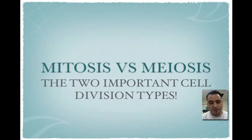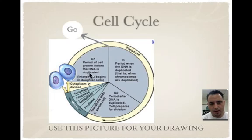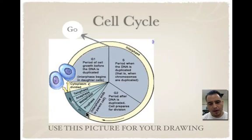Mitosis versus meiosis — the two important cell division types. Let's take a look at the cell cycle. Here we have a drawing you want to use for your drawing. We have interphase, which is where the cell spends 99% of its time. Interphase is really three phases: G1, S, and G2. We also have M-phase, which is made up of mitosis, or it could be meiosis, and cytokinesis.